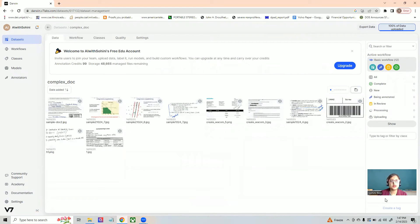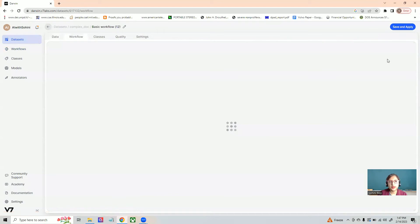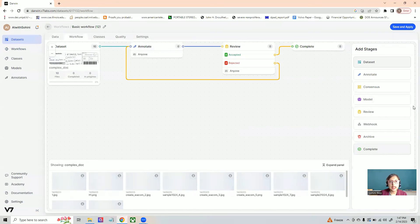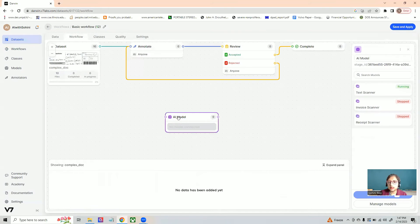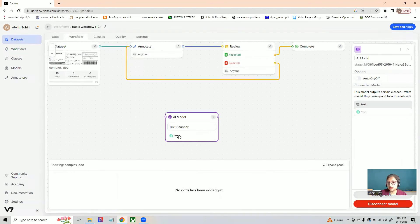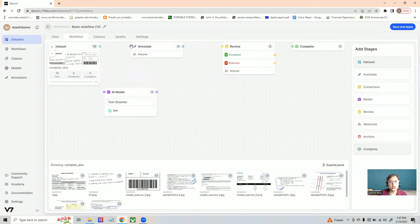And once this is generated, now I will need to go to the basic workflow corresponding to it and change it because now I will need to create a model. And for the AI model, I will need to connect it to the text scanner. And once this is there, I am then going to connect the images directly to AI model. And from the AI model, I'm going to send them to annotate. And if I say save and apply.